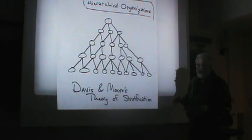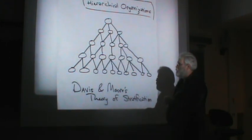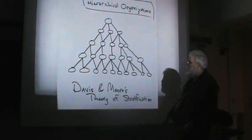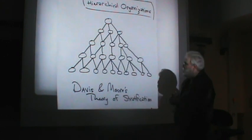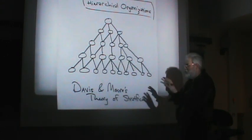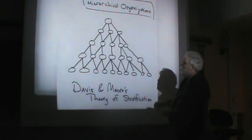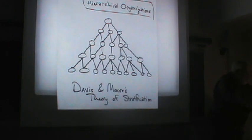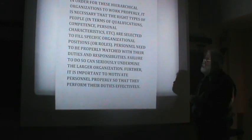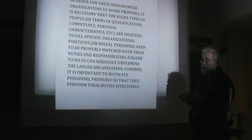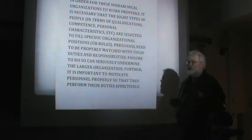This is a very simplified and exaggerated depiction of real-world organizations — I doubt any real-world organization looks exactly like this, and we've probably exaggerated a lot of these tendencies. Nevertheless, when Davis and Moore are talking about hierarchical organizations, generally this is what they're talking about. In order for these hierarchical organizations to work properly, it is necessary that the right types of people — in terms of qualifications, competence, personal characteristics, etc. — are selected to fill specific organizational positions or roles. Getting the right people in the right slots is critical.